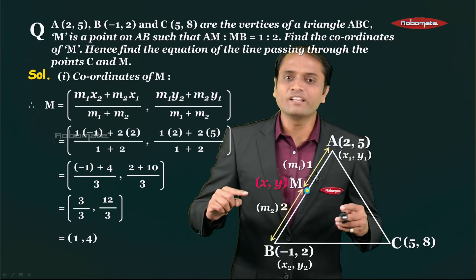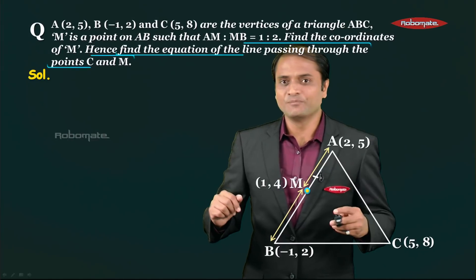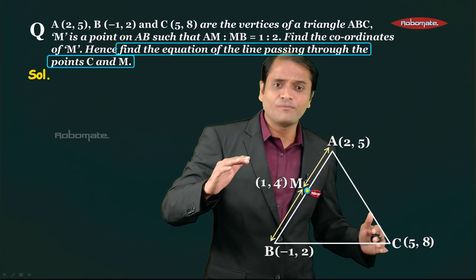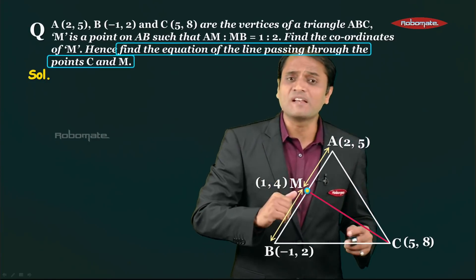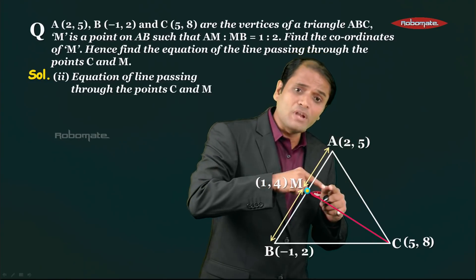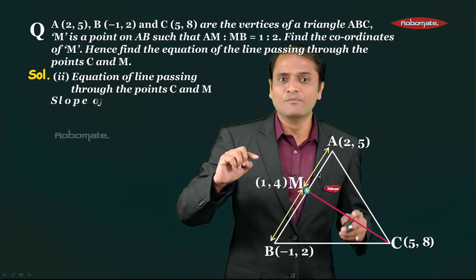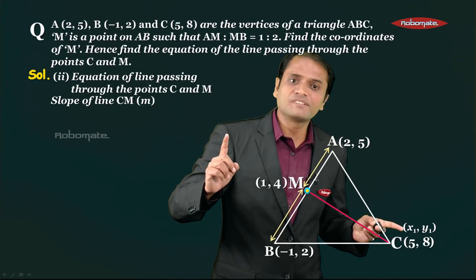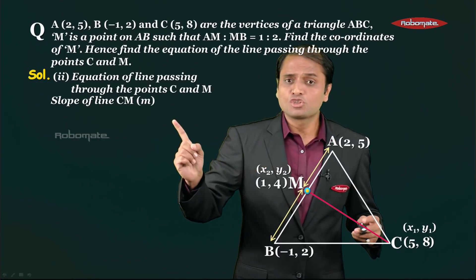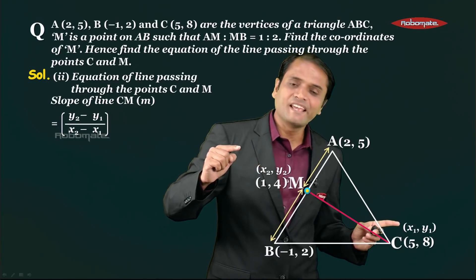So (1, 4) are the coordinates of point M — this is the first part of our final answer. Now for the second part, we need to find the equation of the line passing through points C and M. Let the coordinates of C be x1,y1 and the coordinates of M be x2,y2. The formula for slope m is (y2 - y1) / (x2 - x1).